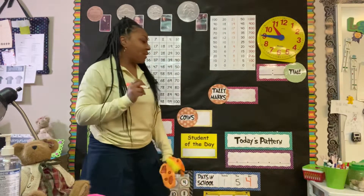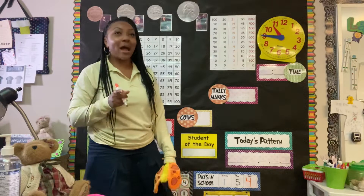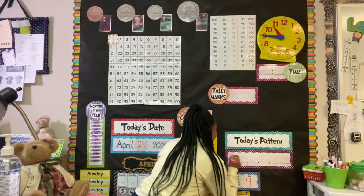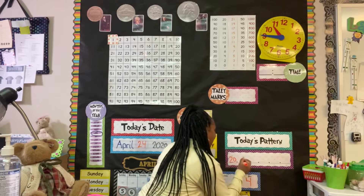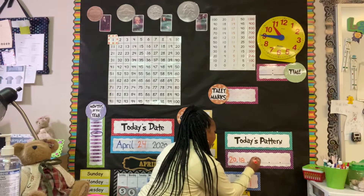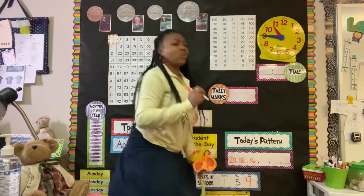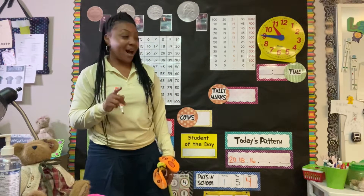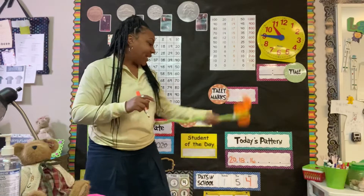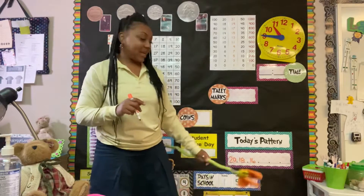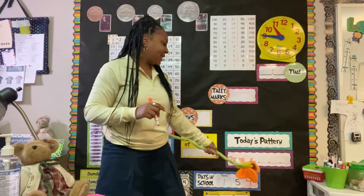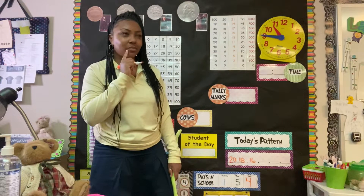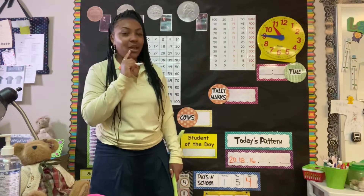All right, let's do a pattern again. I'm going to go backwards, but I'm going to do even numbers this time. So let's start with 20, then 18, 16. What's going to come next? Remember, we're doing even numbers — last video we did odd. So if I have 20, 18, 16, what's going to come next? Not 15 — 14.